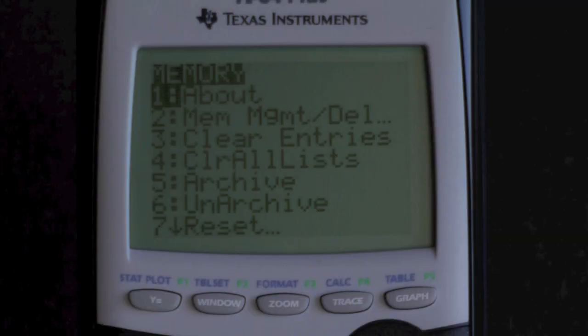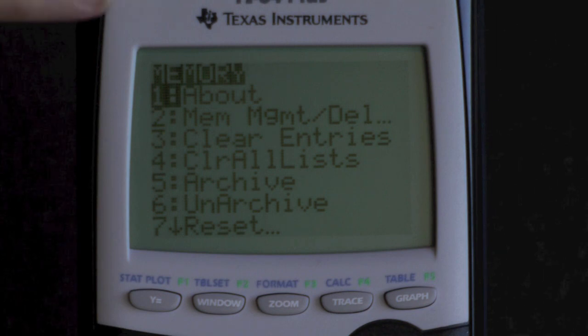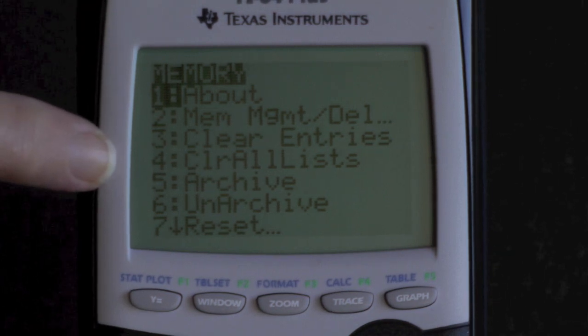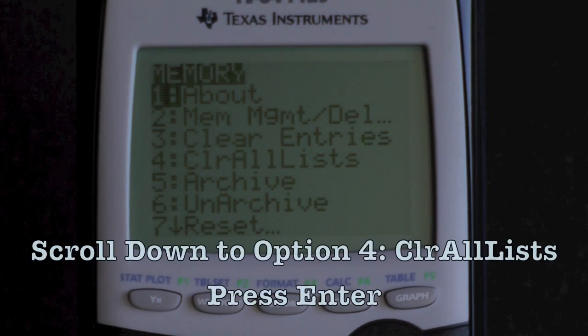This brings up the memory options. Option 4 says Clear All Lists, so scroll down to number 4 and press Enter.